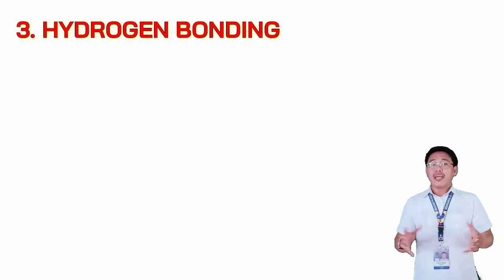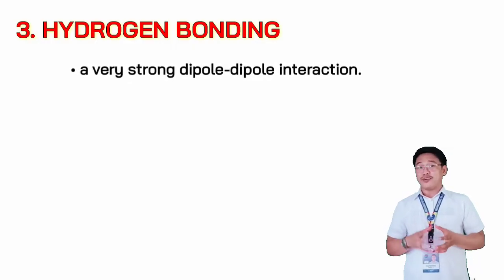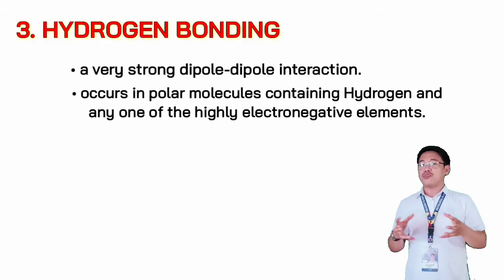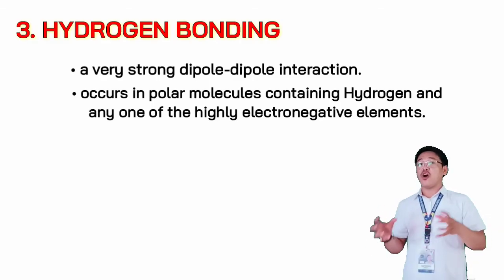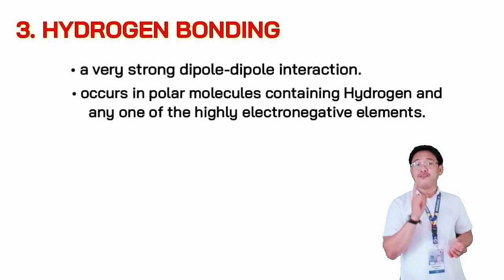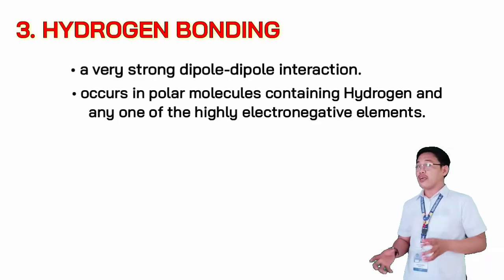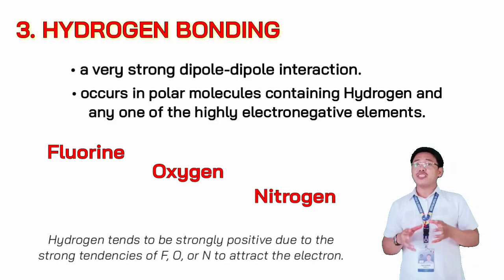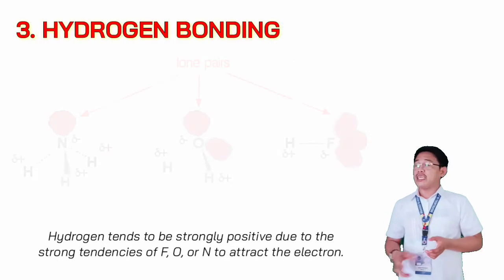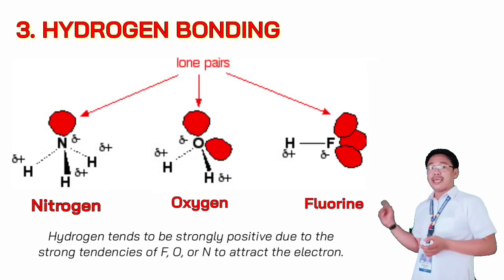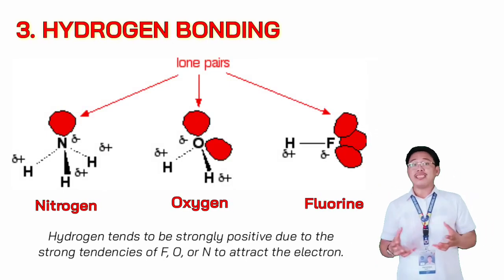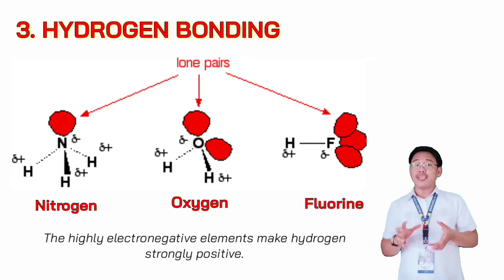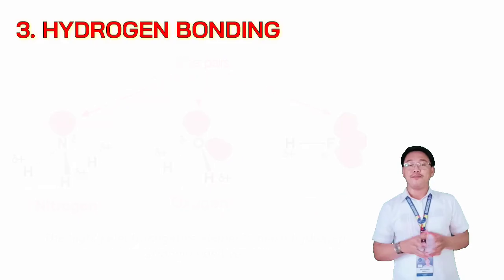We also have the hydrogen bond. Hydrogen bond is a very strong dipole-dipole interaction. It occurs in polar molecules containing hydrogen and any one of the highly electronegative elements. Hydrogen bonds tend to be strongly positive due to the strong tendencies of fluorine, oxygen, and nitrogen to attract electrons towards them. The highly electronegative elements make hydrogen strongly positive.